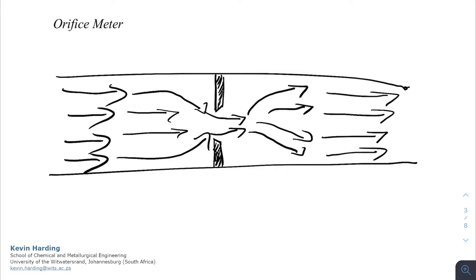We're now going to label different points in the pipe: point 1, point O (or zero), point 2, and point 3. Point 1 is where the flow is still normal and hasn't been affected by the orifice plate. Point O is the orifice plate itself. Point 2 is the vena contracta — where the flow area is at its most narrow and therefore the velocity is at its fastest. Point 3 is further down the pipe where the flow returns back to normal.